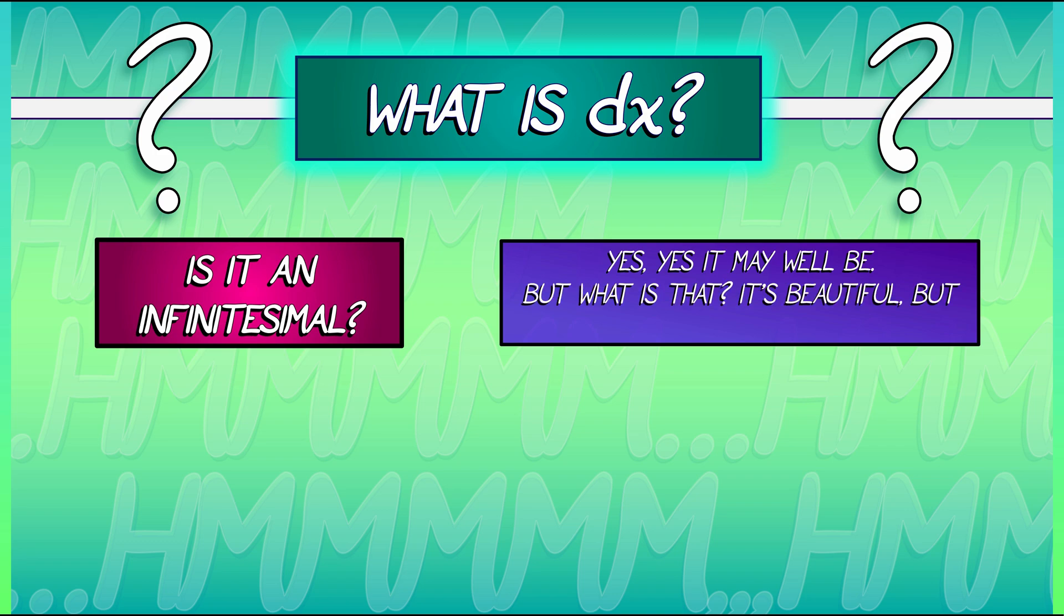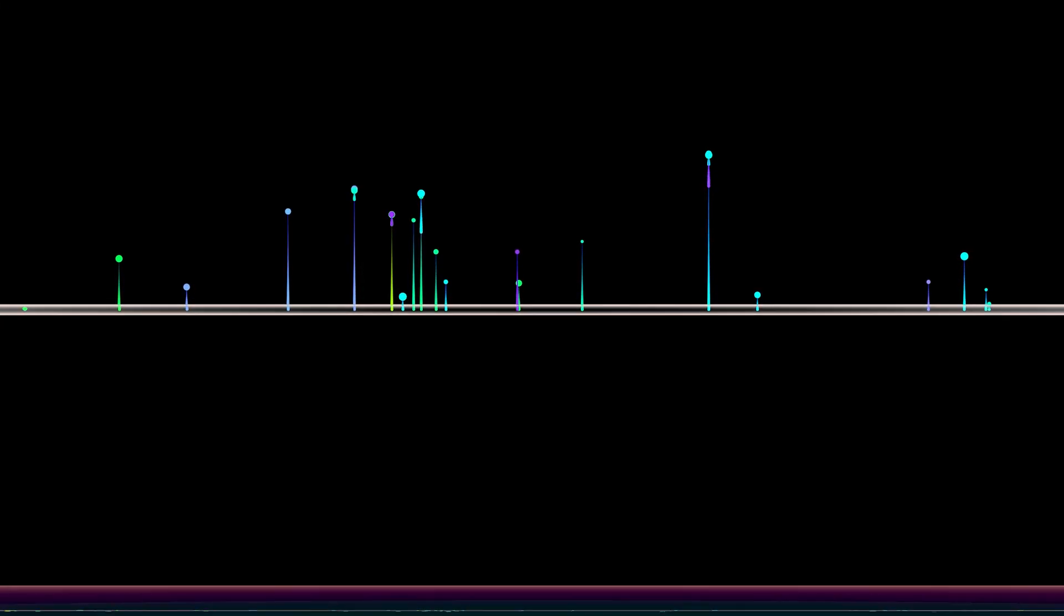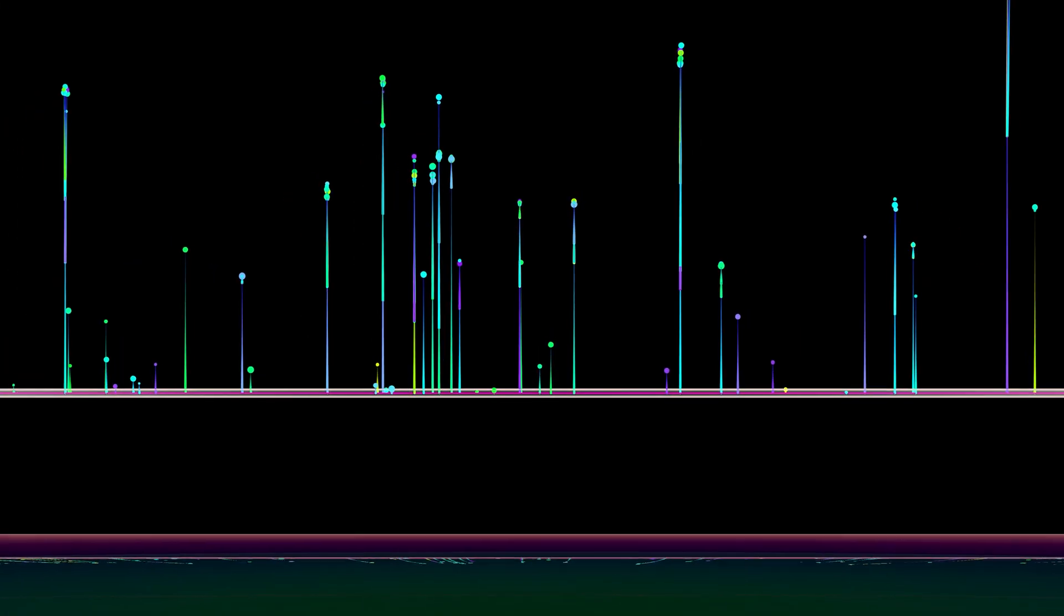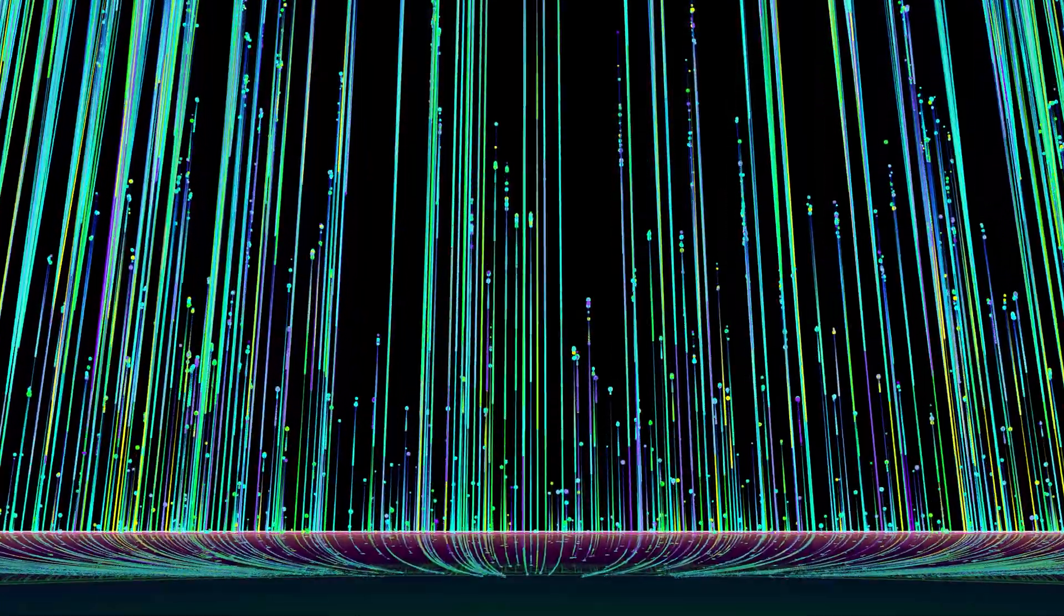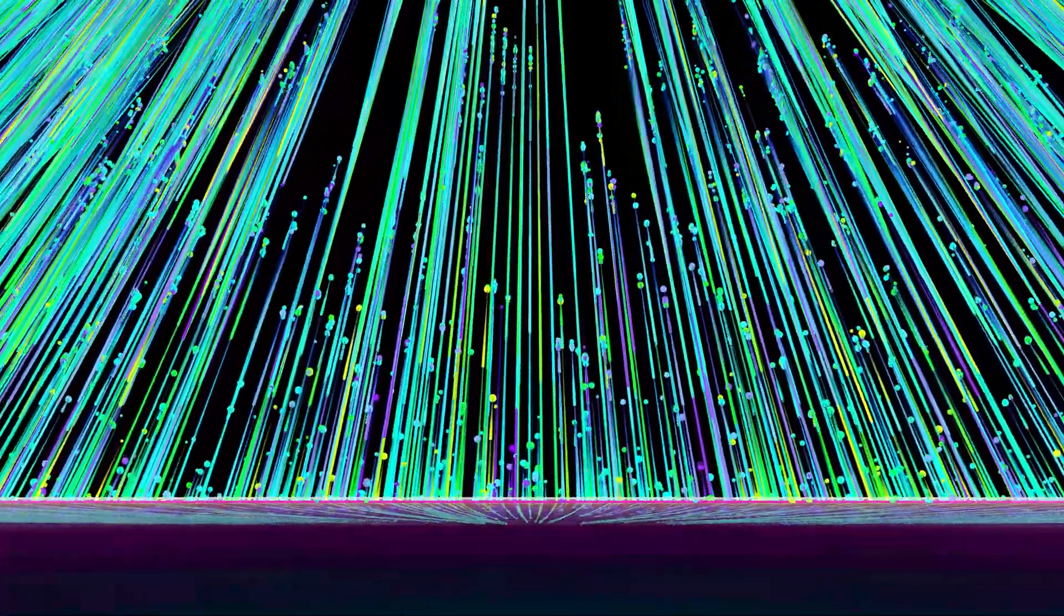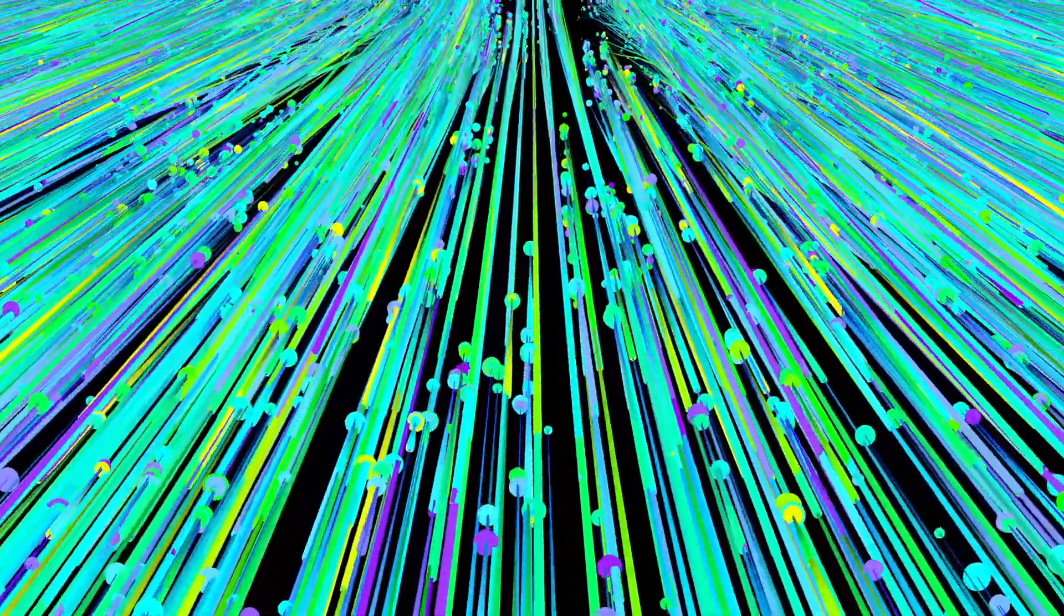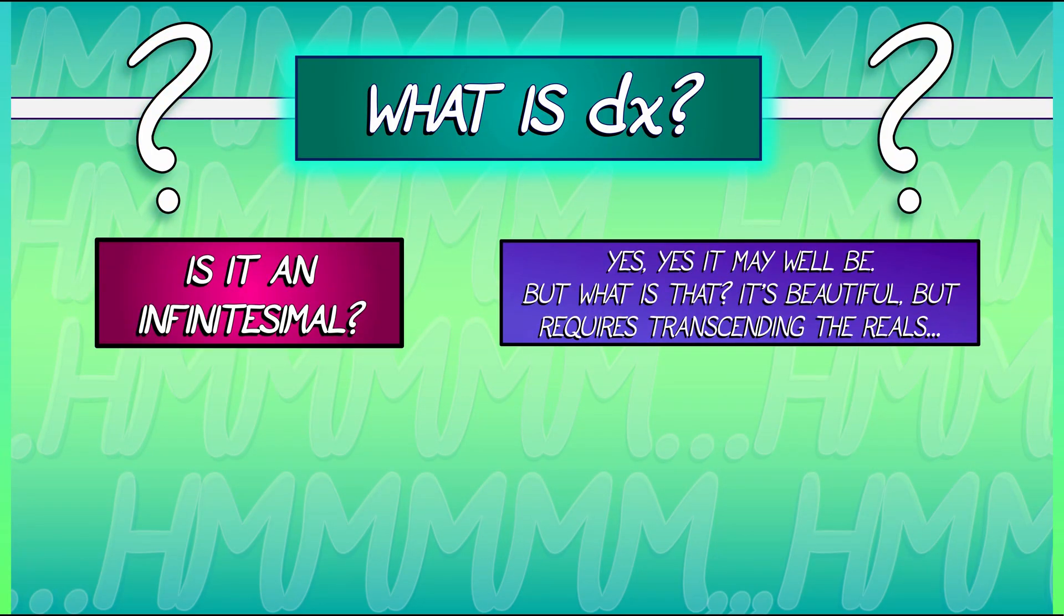Infinitesimals are not some abstraction or idealization. They are actual things. You can actually define them. And they're so beautiful. It's such a lovely theory. But to actually do the definitions? That requires transcending from the reals to the hyperreals. And it's complicated. We can't go there. We need a different way of thinking about what DX is.